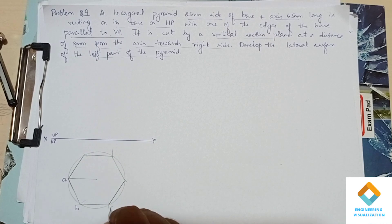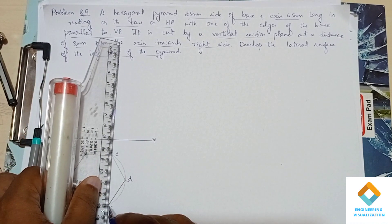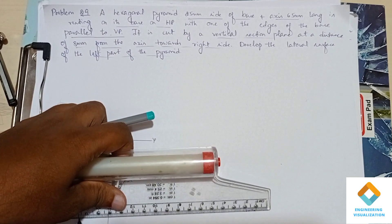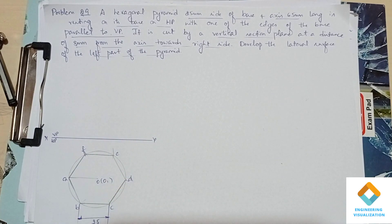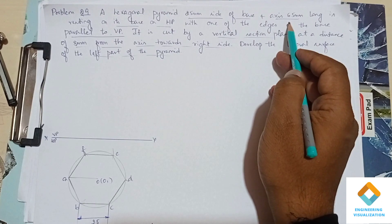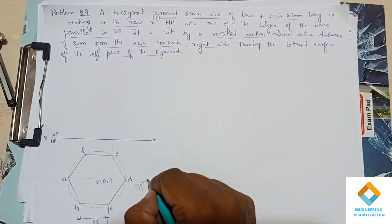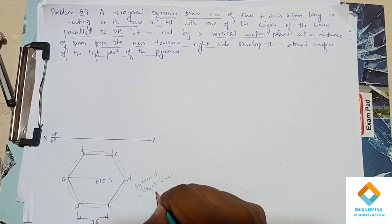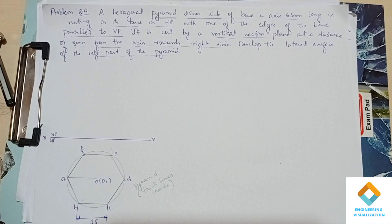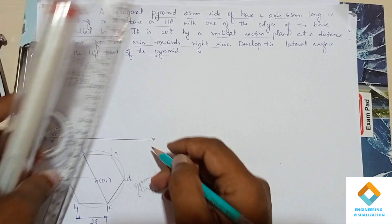Give the namings A, B, C, D, E, F. Show the dimension for one side — I'll show for the bottom edge, the dimension of 25 mm. This is the center of the axis O. Since it is a pyramid, we have to draw the inside lines as slanted thick lines. For a pyramid the inside lines should be thick; for a prism they should be thin lines. I'll be drawing the thick lines inside the pyramid with the help of the scale.